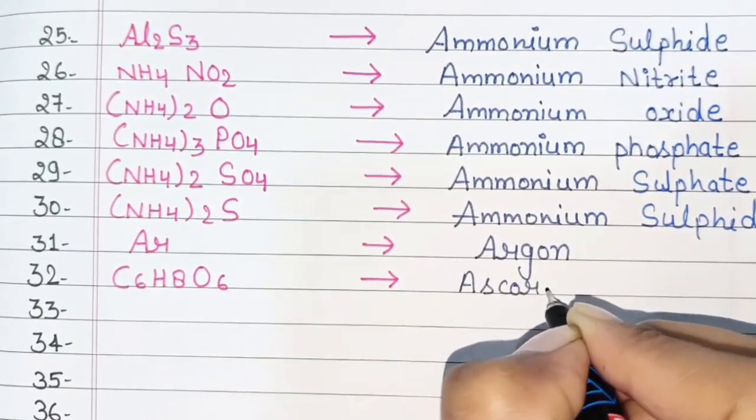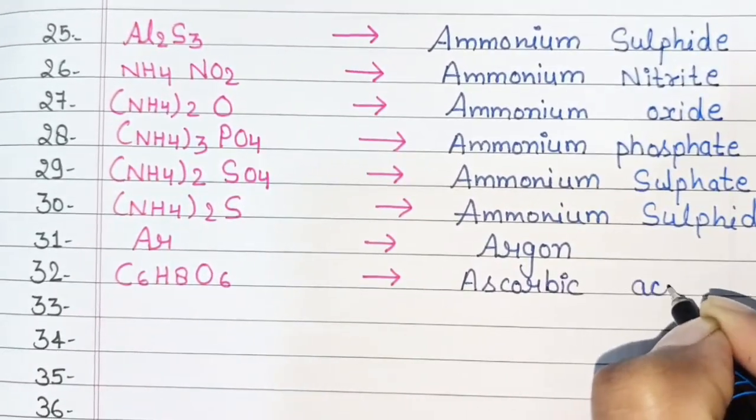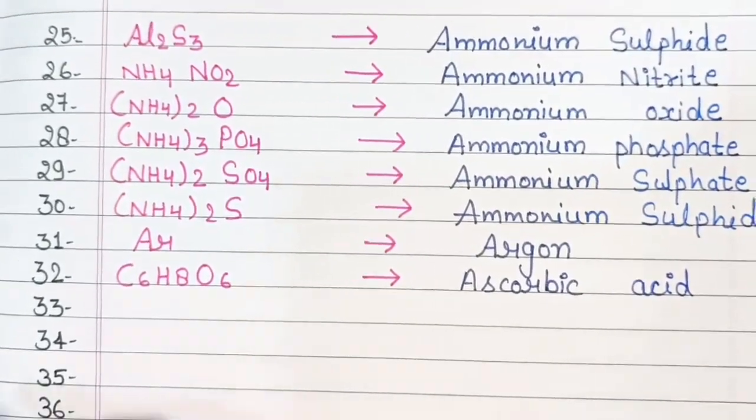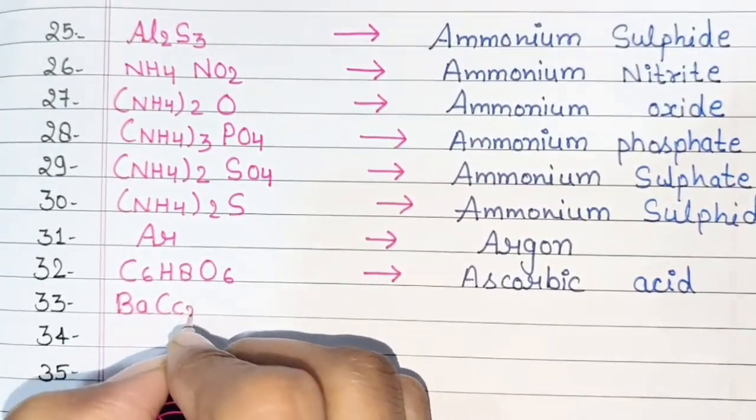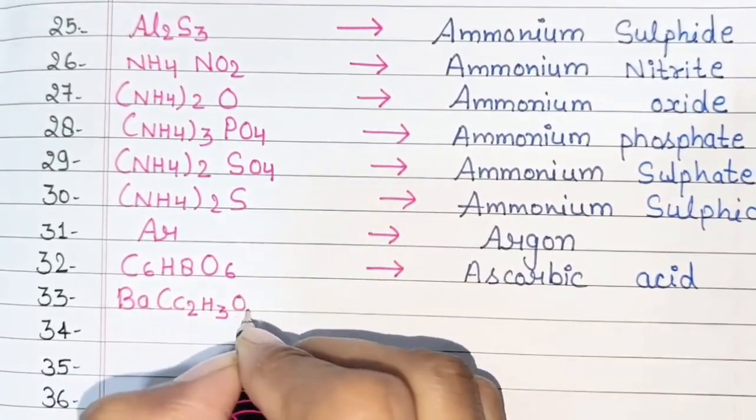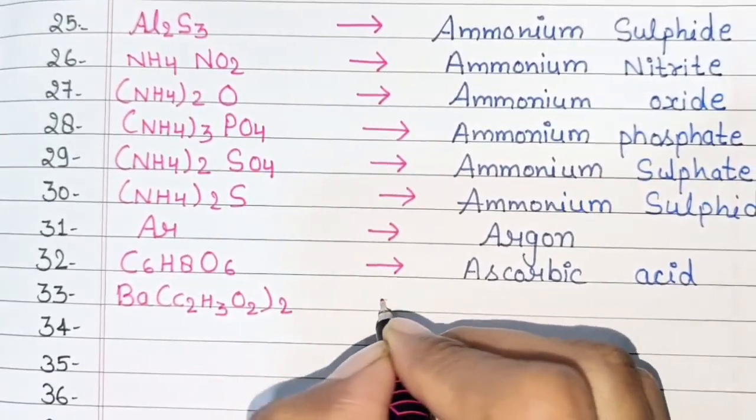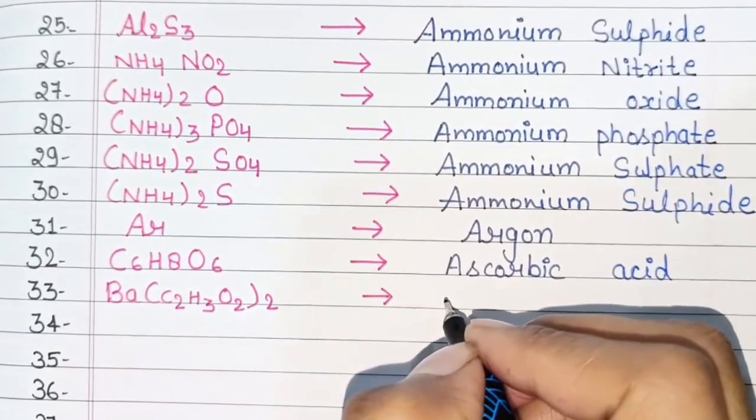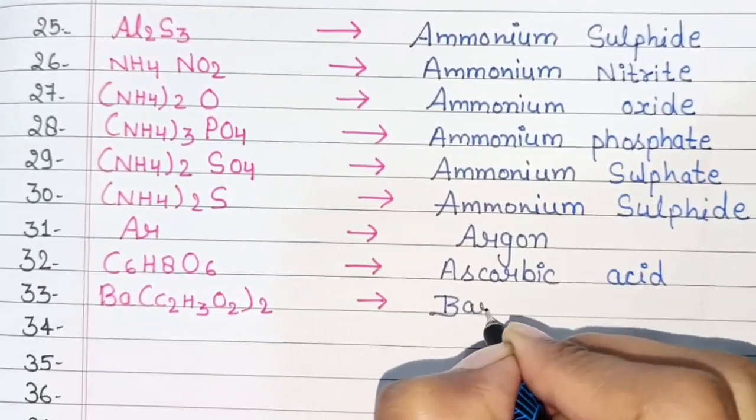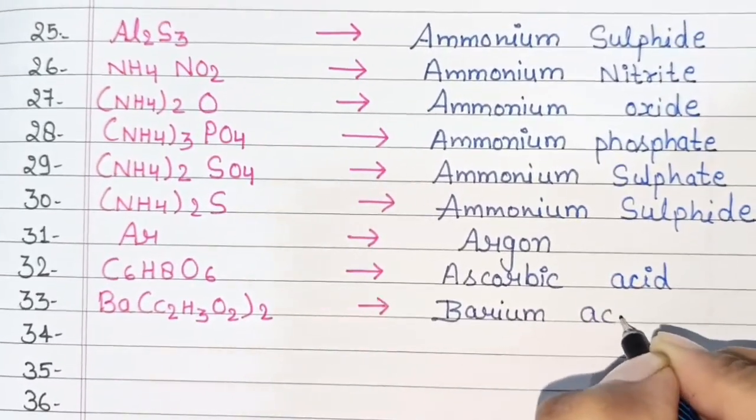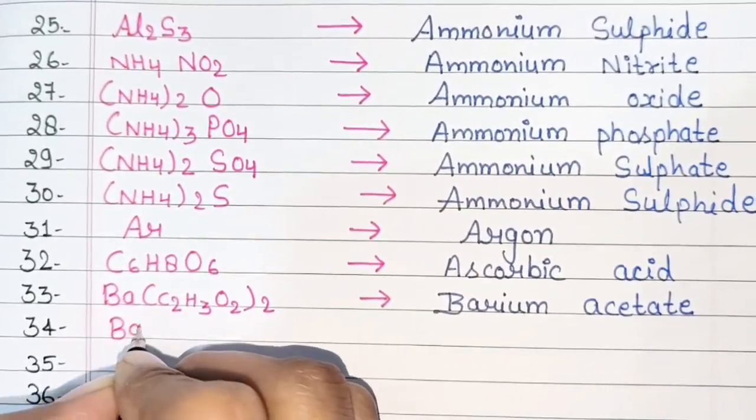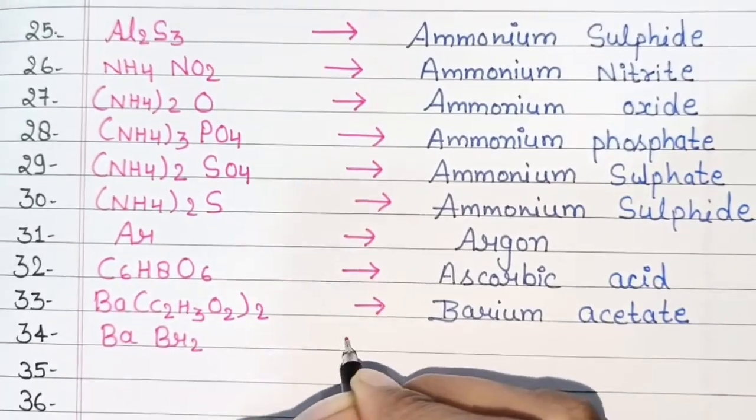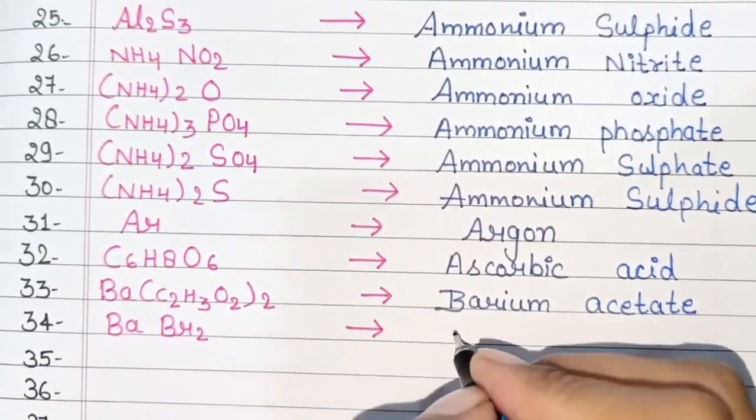Ba(C2H3O2)2, Barium Acetate. BaBr2, Barium Bromide.